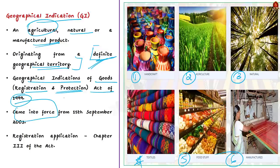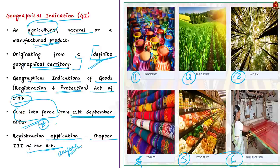The Act came into force from 15th September 2003. In order to get the GI tag, an application for registration has to be made under Chapter 3 of this Act. Such an application can be made by any association of persons, producers, or any organization or authority representing the interest of the producers of the concerned goods. As per Section 18 of the Act, the registration of a geographical indication shall be for a period of 10 years, but it may be renewed from time to time.